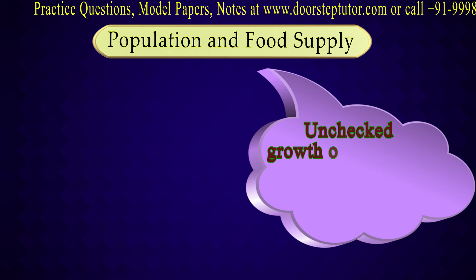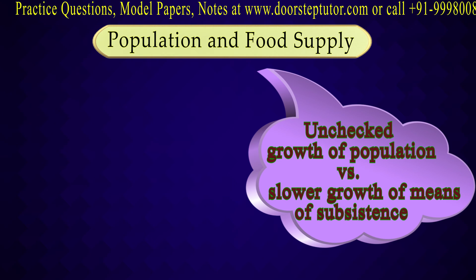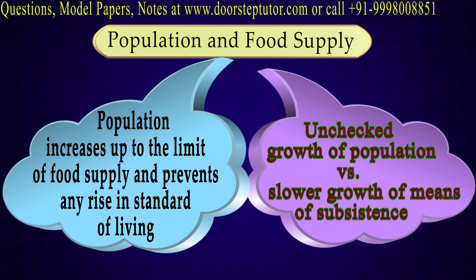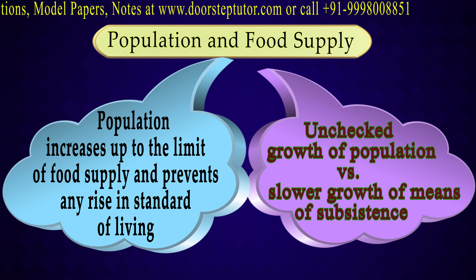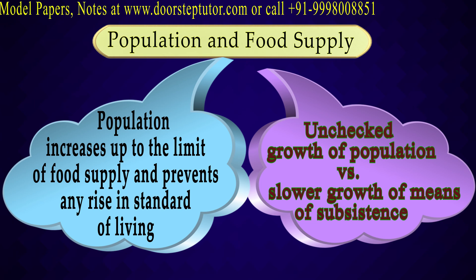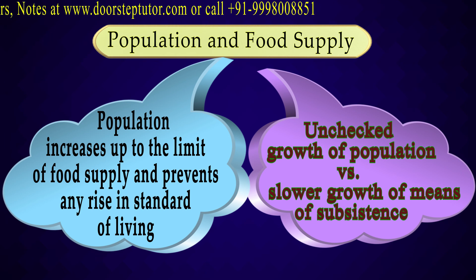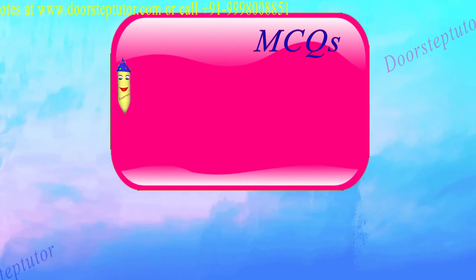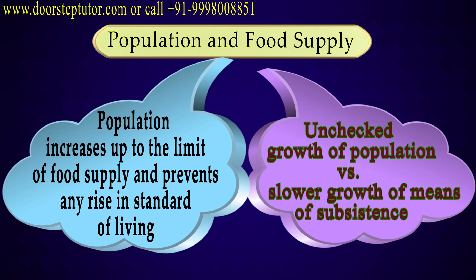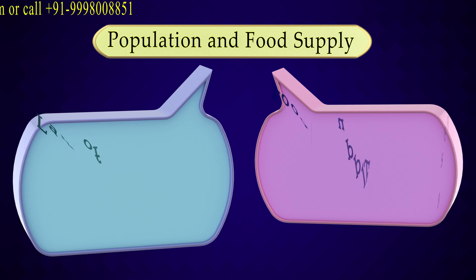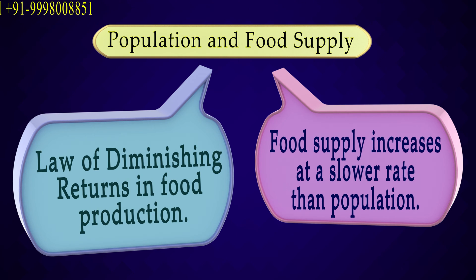What happens as a result? There will be an imbalance — the equilibrium will be disturbed. When this imbalance exists, the limit of food supply will be exceeded, leading to poverty, hunger, and an obstacle to the standard of living. Because in order to have a good standard of living, we need access to resources. When we do not have that access, the living standard falls further. This is the law of diminishing returns in food production: food supply increases at a slower rate than the rate of increase in population.